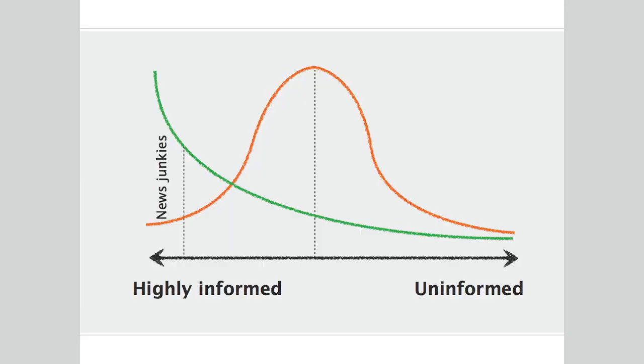As you move into an environment where there's an infinite number of choices, you begin to see a really different curve. You basically have a group of news junkies who know everything about everything, and then there's a fairly steep fall off for a lot of the population. Because if you don't actively find yourself in contact with news content, you could miss it entirely. The median can drift down from where it was previously. So perversely, even though we have access to more information than ever, people don't have it in their heads as much as they used to.